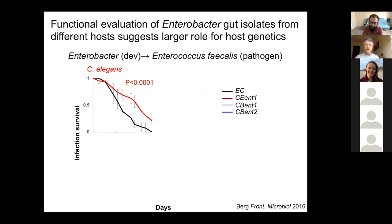We realized that Enterobacteriaceae make a significant part of the worm gut microbiome, and that this seems to be geographically conserved. We isolated many different bacteria from the worm gut belonging to this family using selective media, and many of them were members of a genus called Enterobacter, with Enterobacter cloacae being most common. Those bacteria turned out to have beneficial effects for the worms — many of them accelerated worm development by a few hours at minimum.